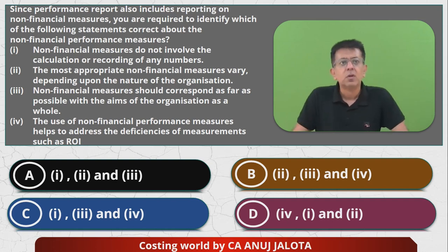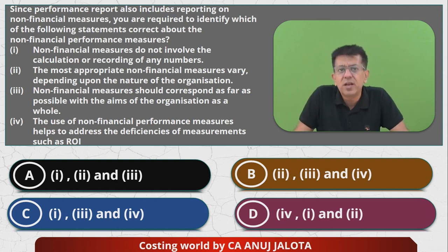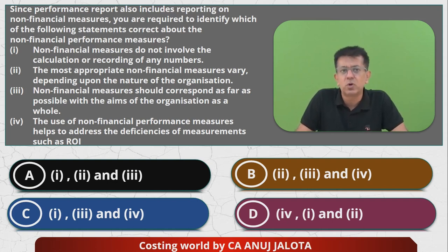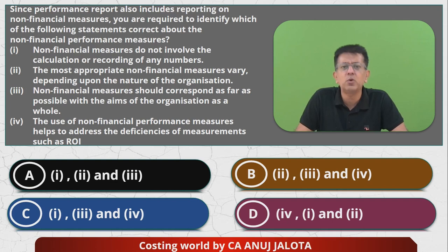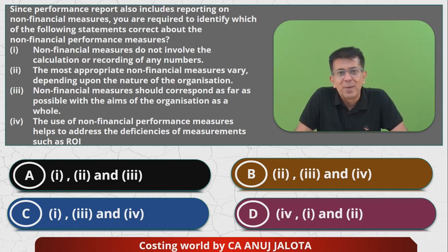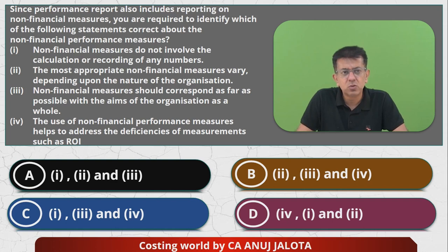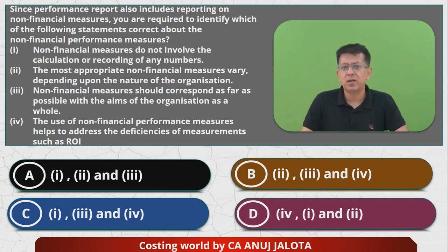Point three: non-financial performance measures should correspond as far as possible with the aims of the organization as a whole. Yes — you should measure those things which matter to you, meaning the objectives of the business. So point three is correct.